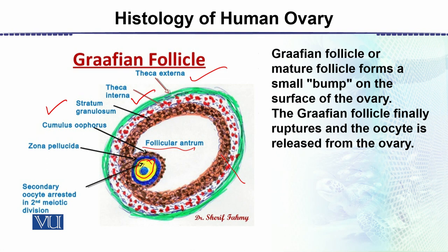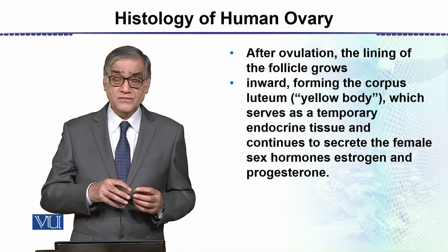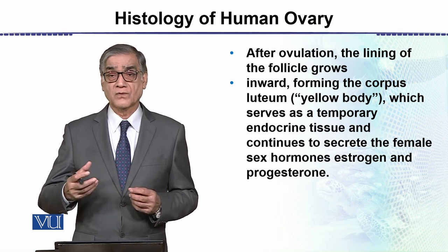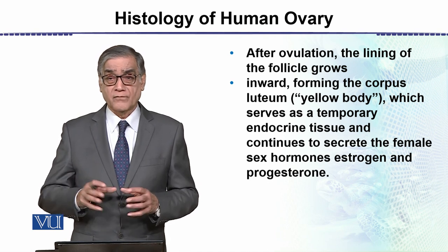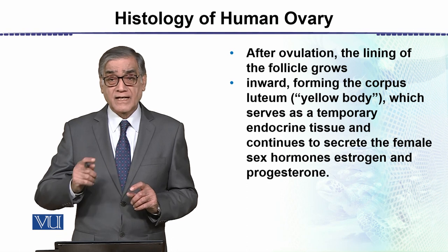The mature egg is released from the ovary, and this part of the gland is transformed into another gland called the corpus luteum, which is a glandular structure that produces progesterone. The Graafian follicle is the mature follicle that releases the egg. Ovulation means the release of the ovum from the surface of the ovary, after which it enters the fallopian tube. If sperms are present, it will be fertilized.